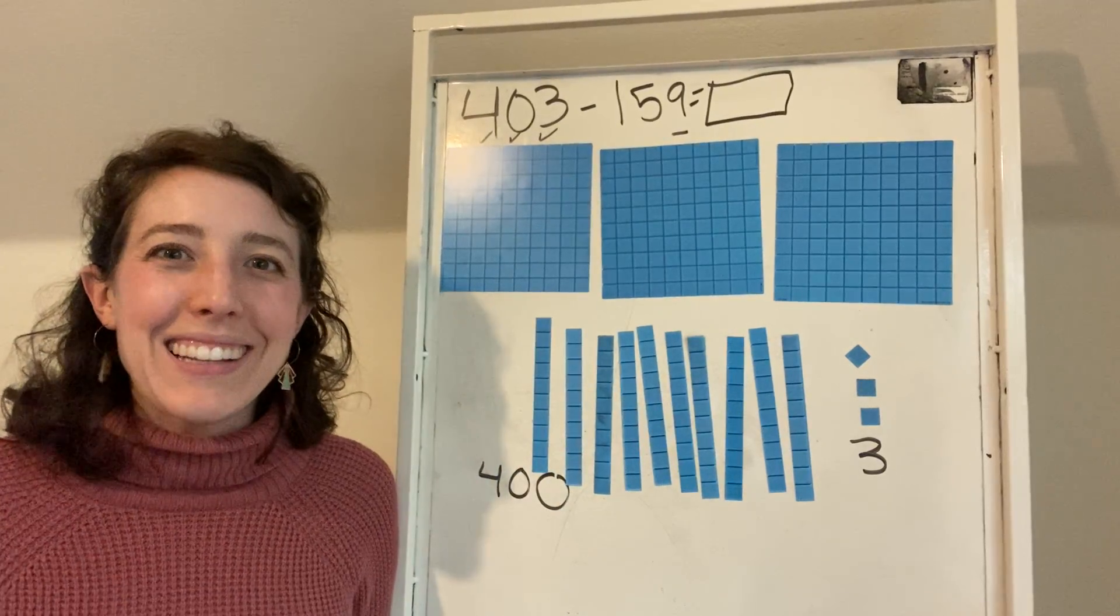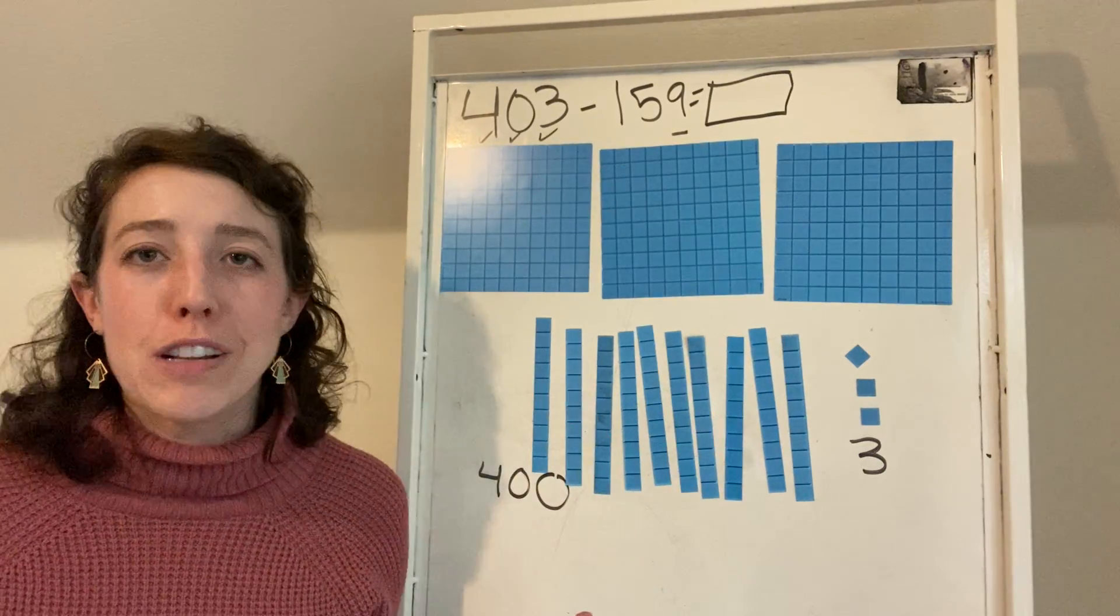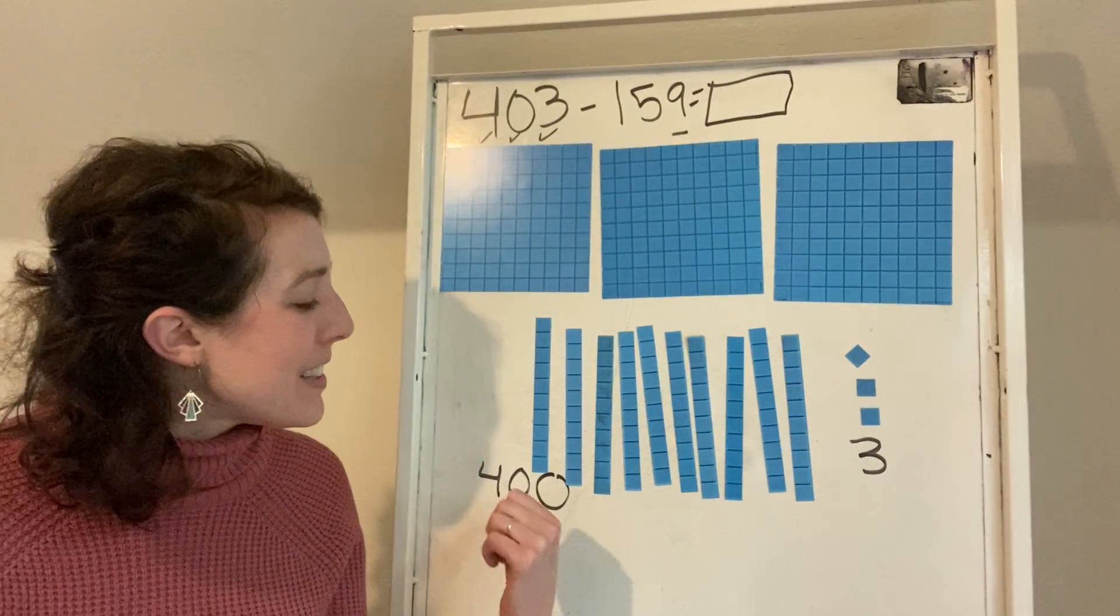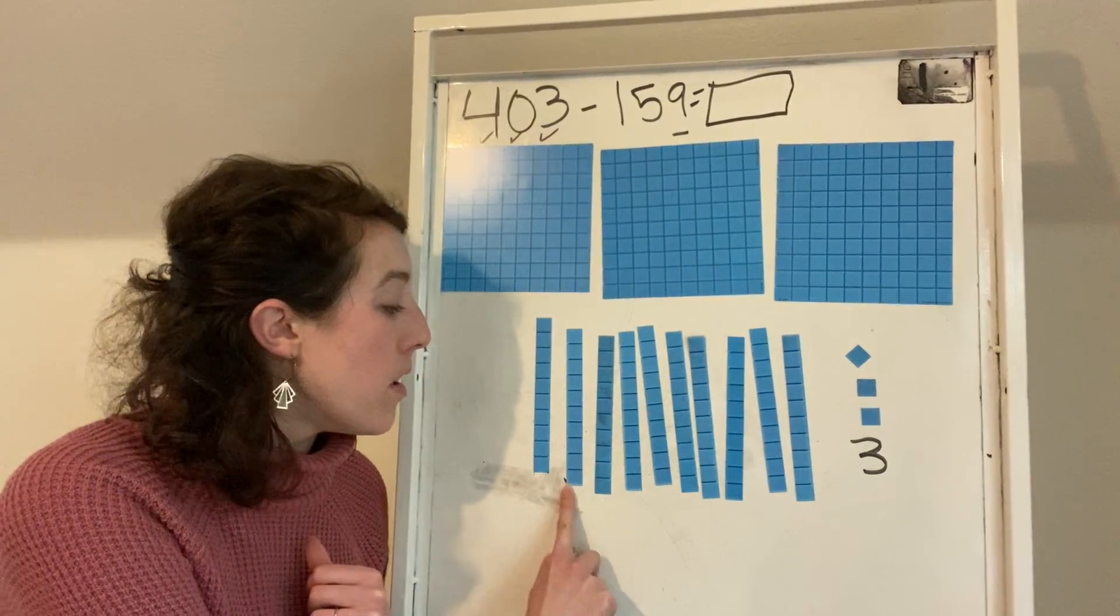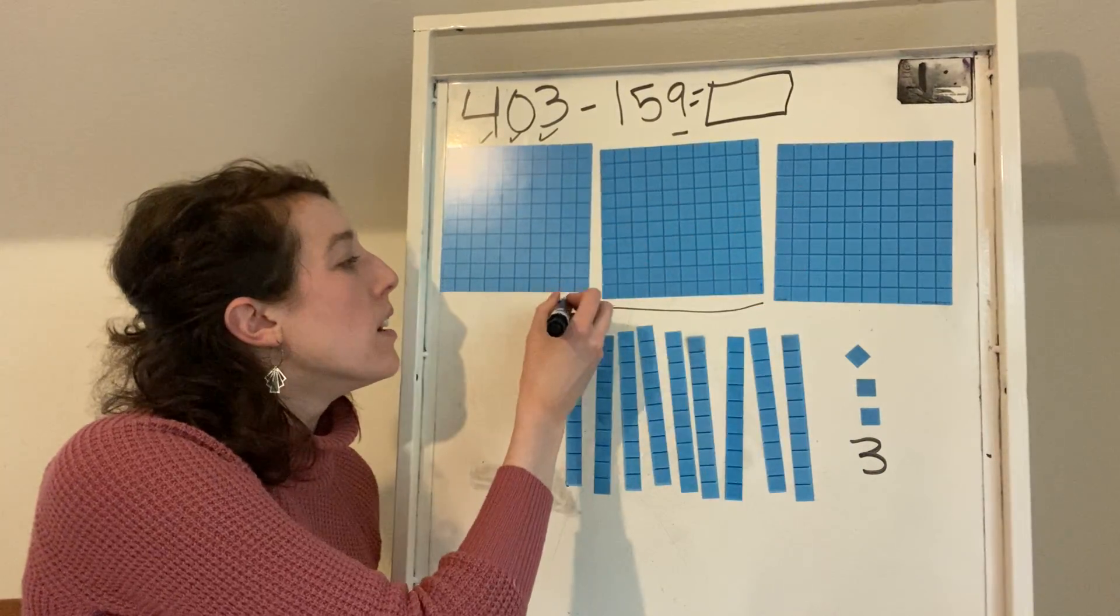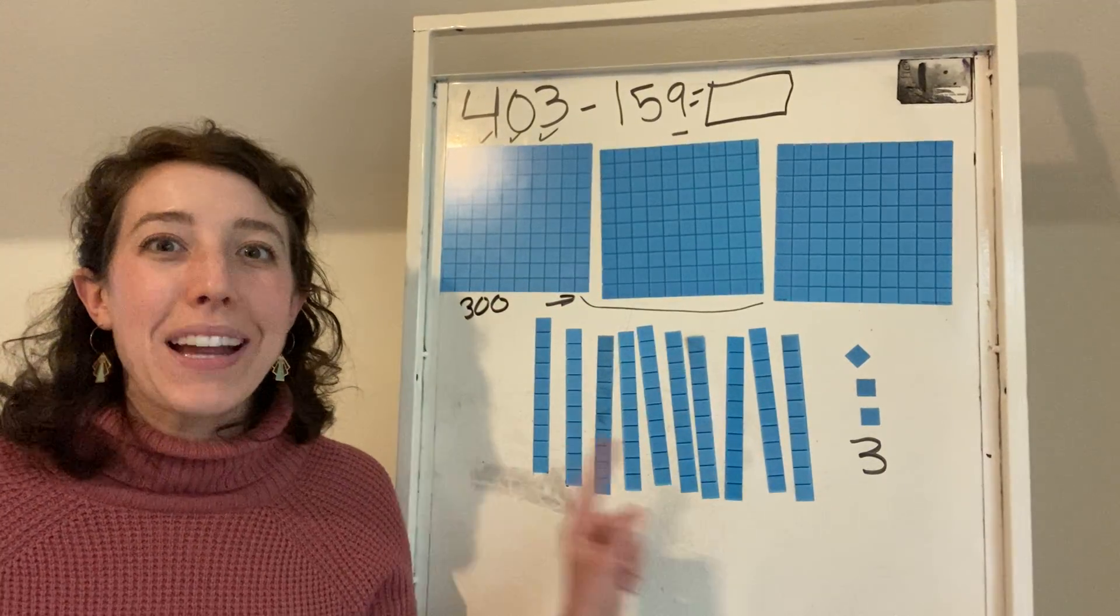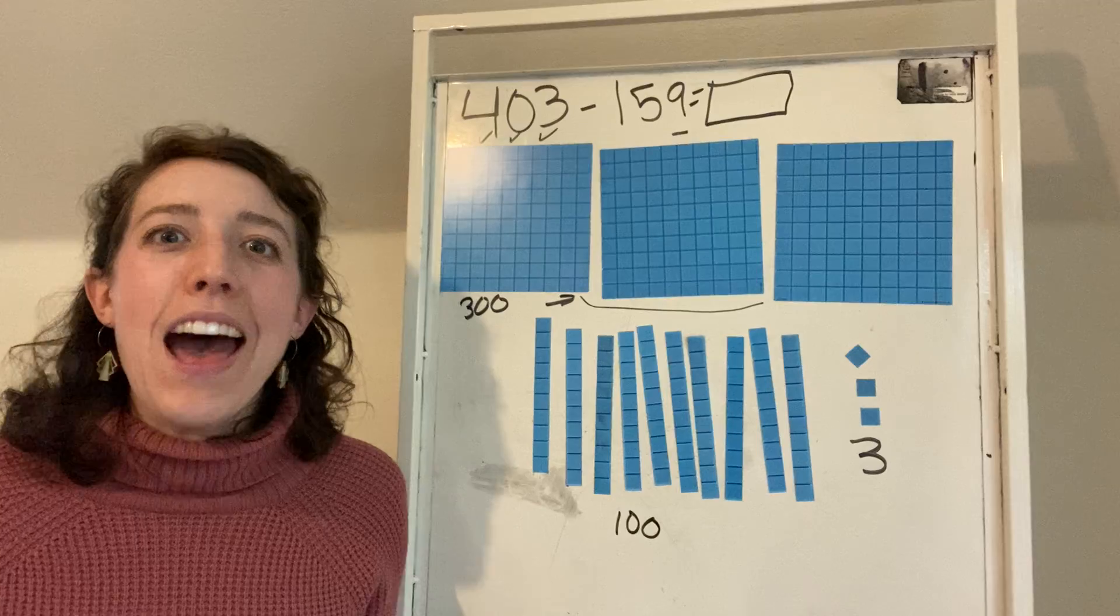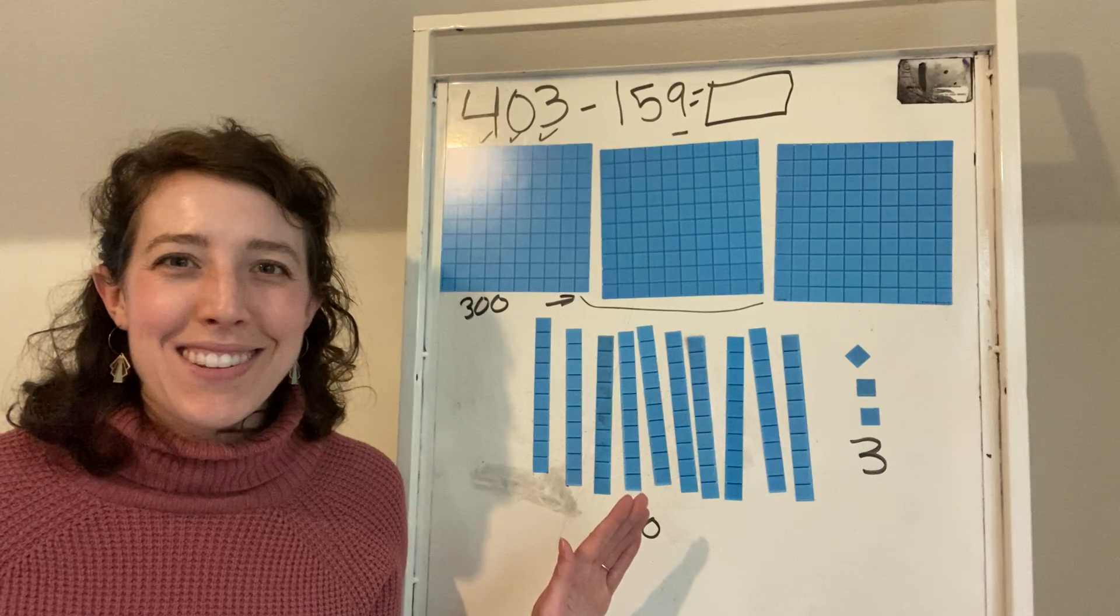So one of the things that we talked about is making sure that our picture matches our label. So I have three hundreds and 10 tens. And that still is 400 altogether. But I'm going to make sure that my label is super accurate. I'm going to label these as my 300. And now my 10 tens over here are 100. So now that I have broken up my 100, do I finally have some ones?